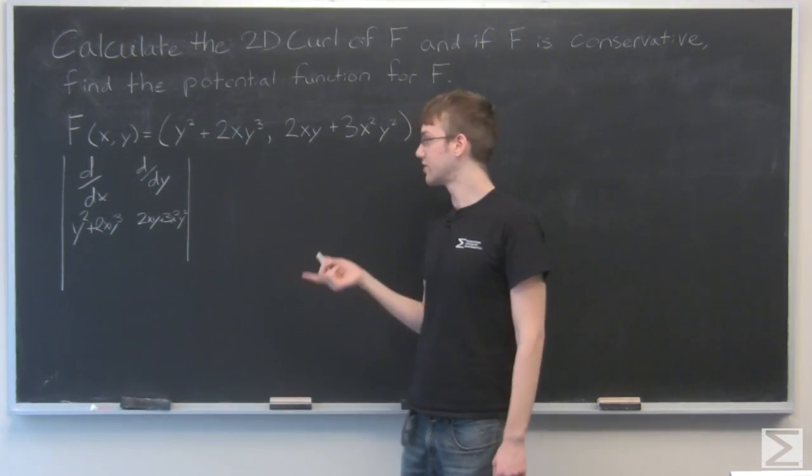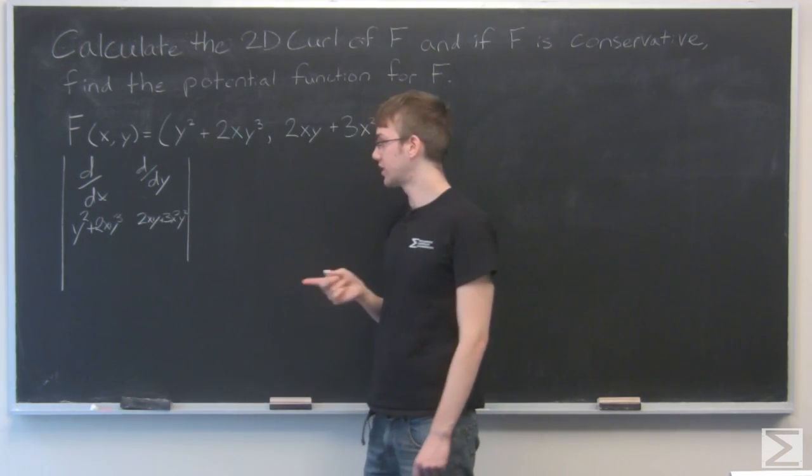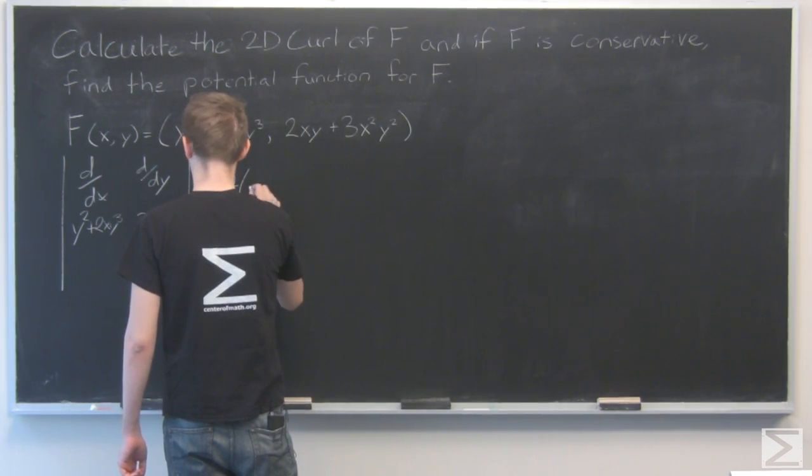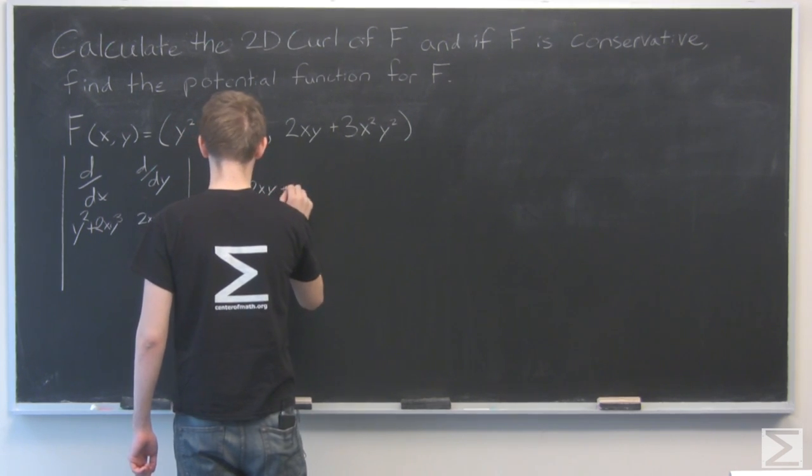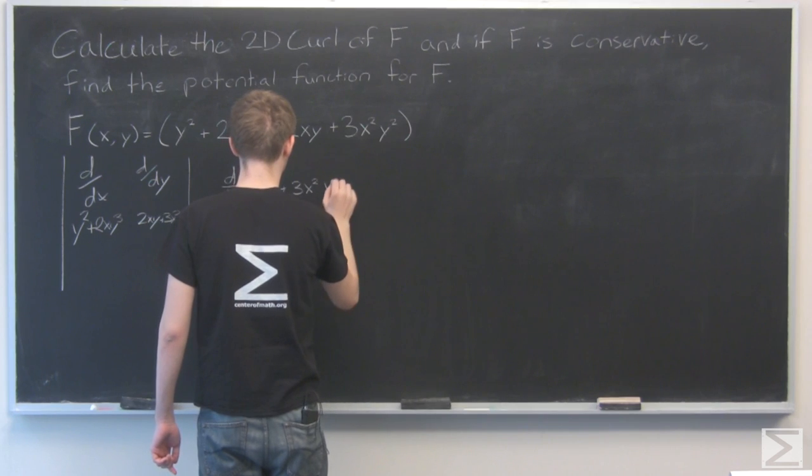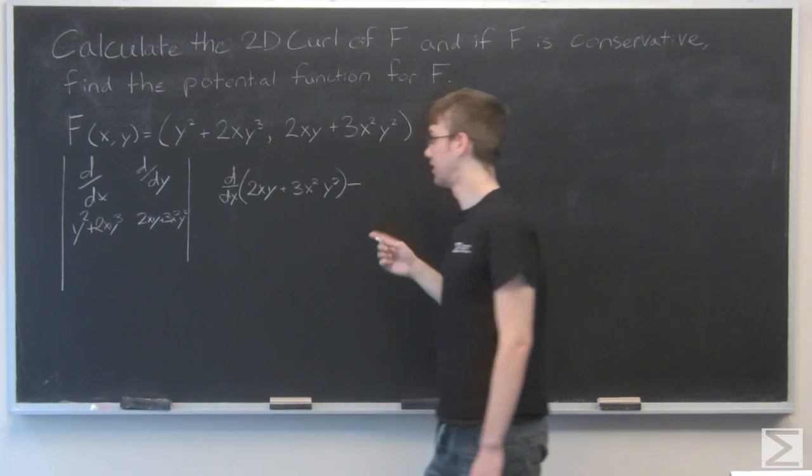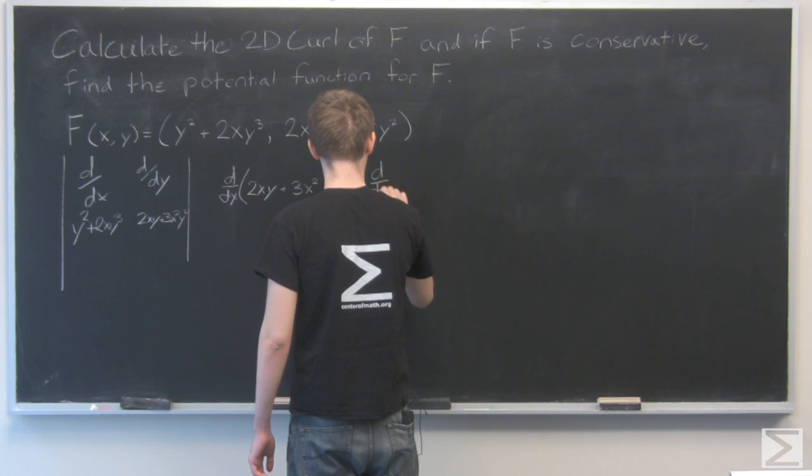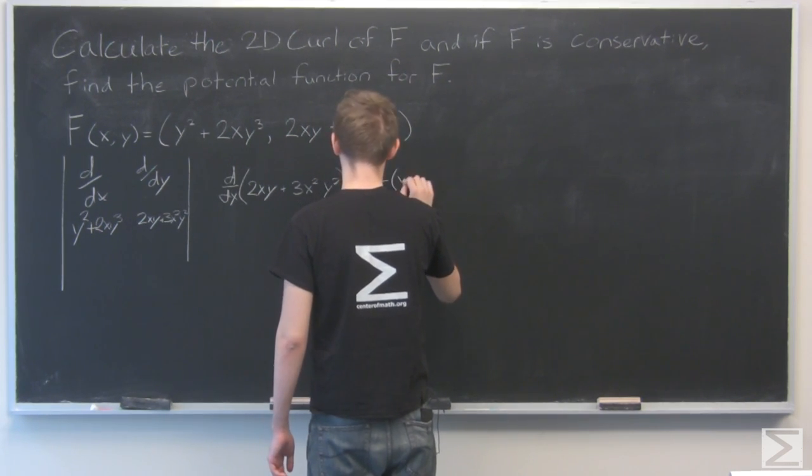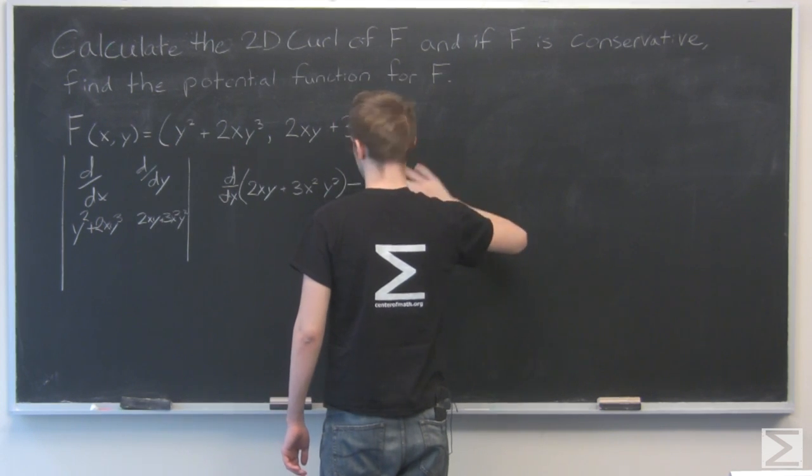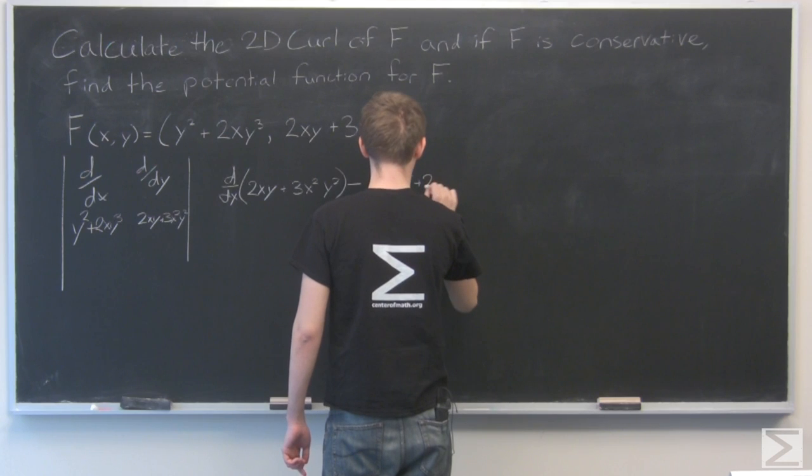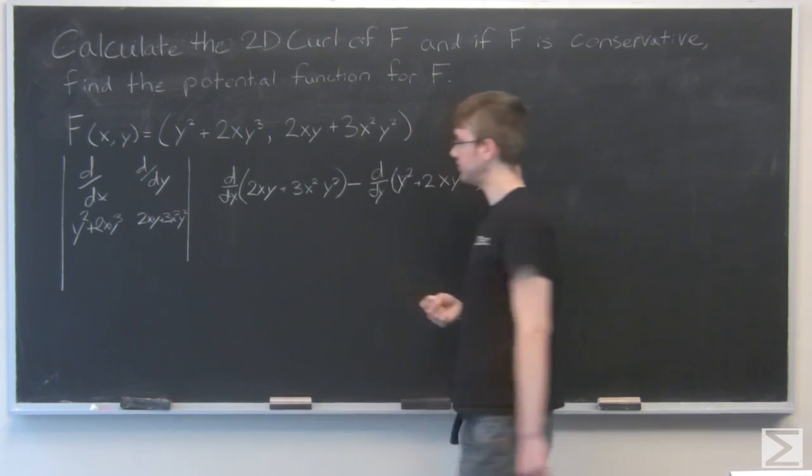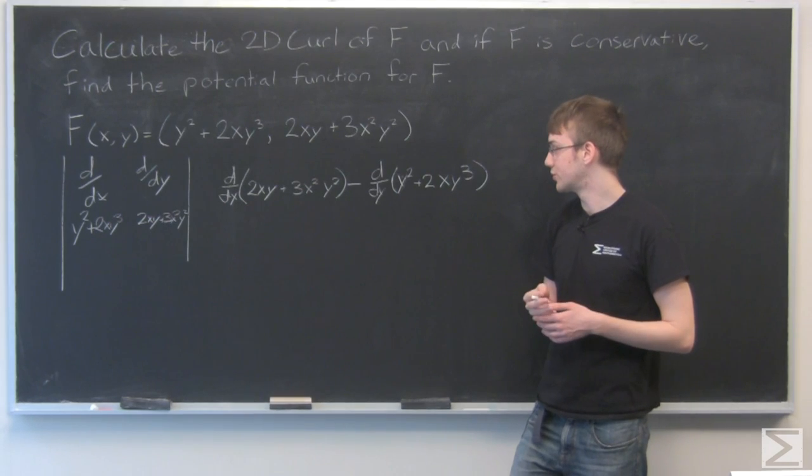All right, so first we're going to multiply across the main diagonal and have d/dx times 2xy plus 3x squared y squared, subtract d/dy times y squared plus 2xy cubed. Now we just take the derivative with respect to y and with respect to x.